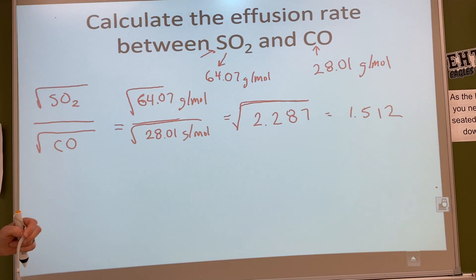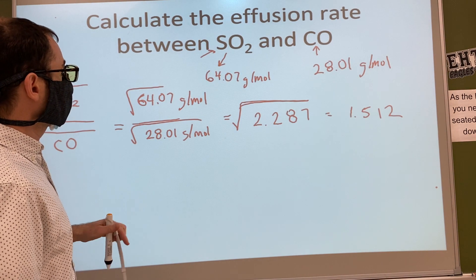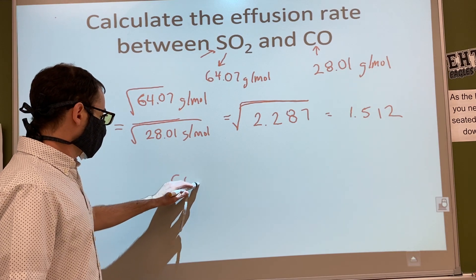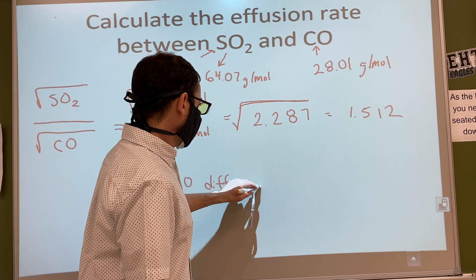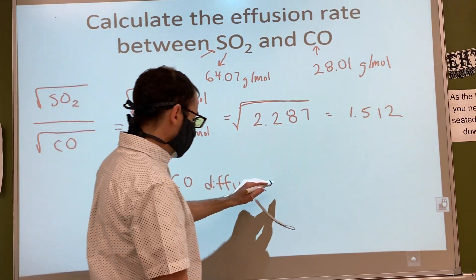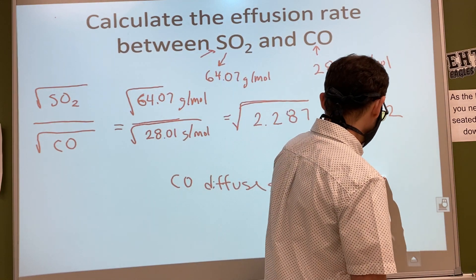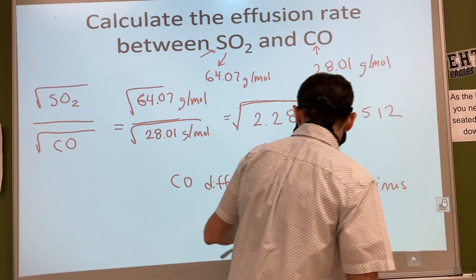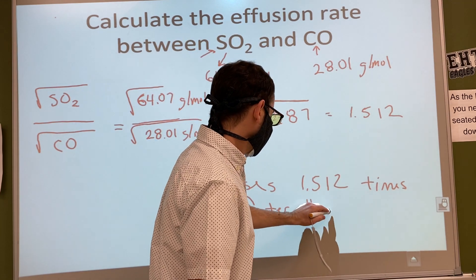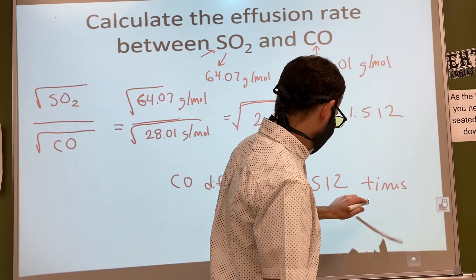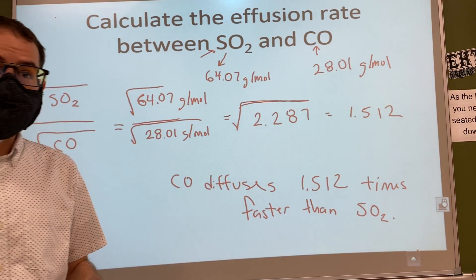Olivia, can you tell us what the sentence is going to be? CO diffuses 1.512 times faster than the acid. Good, good. CO, or carbon monoxide, diffuses 1.512 times faster than SO2. All right. Any questions?